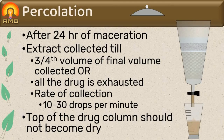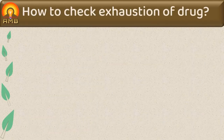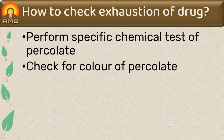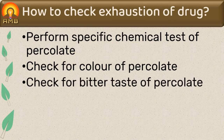To check whether all the drug is exhausted, specific identification tests can be performed on the percolate for the presence or absence of active constituents. If the percolate shows presence of active constituents, the drug is not yet exhausted. Alternatively, we can check the color of the percolate — if color is absent, all the drug is exhausted. We can also check whether the percolate has a bitter taste; absence of bitter taste indicates complete exhaustion.